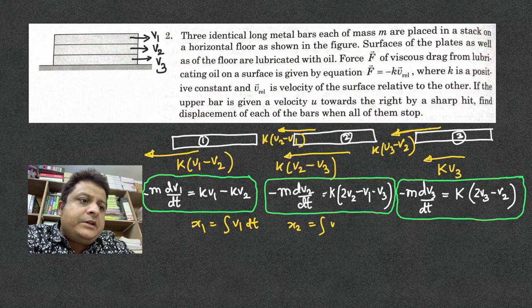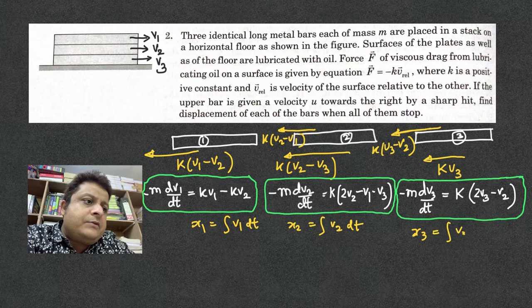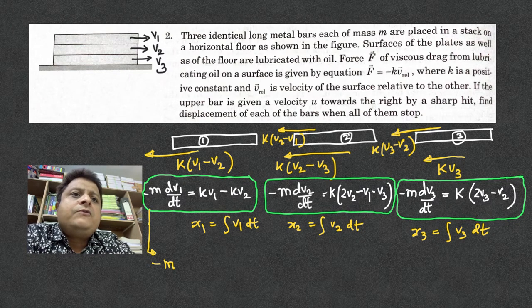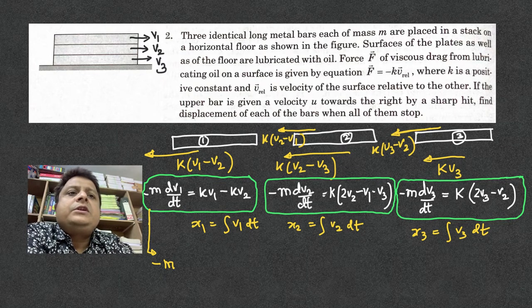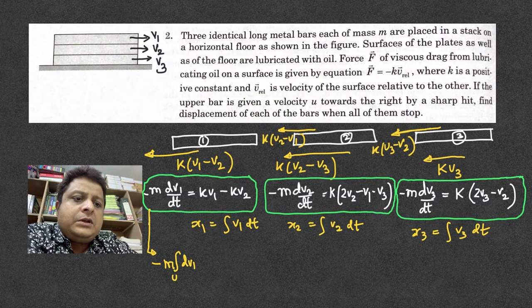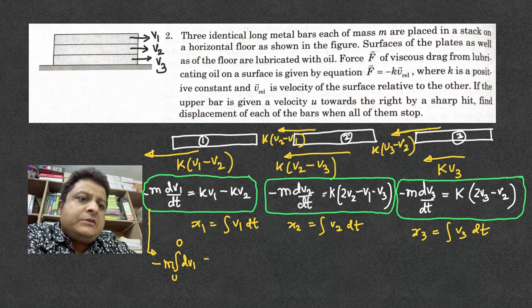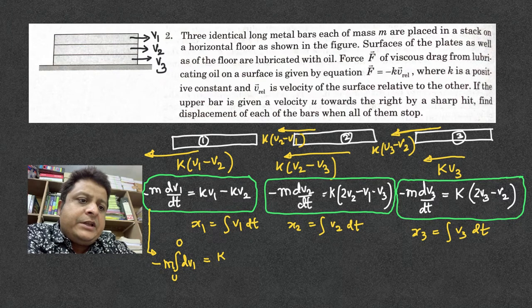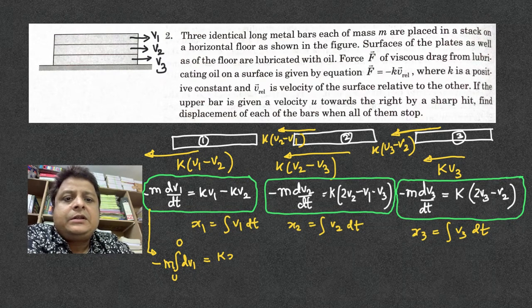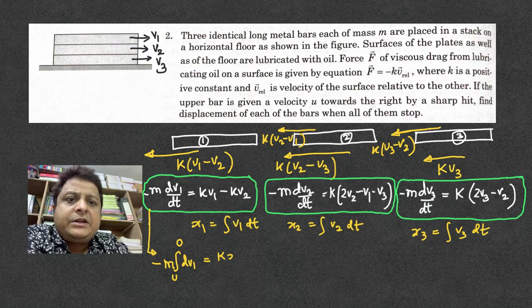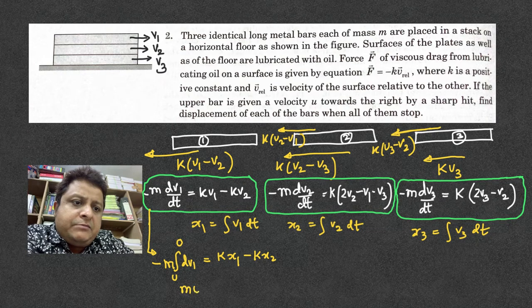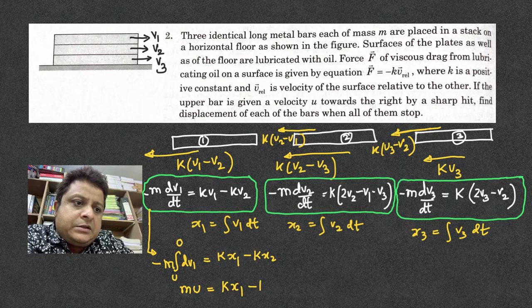From the first equation, -m times, so v1 varies from u to 0. Integral of dv1 starts from u and final velocity is 0, so that's equal to k times x1 - x2. Therefore, mu = k(x1 - x2).